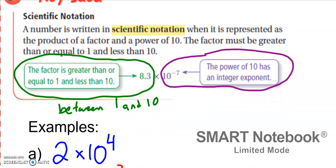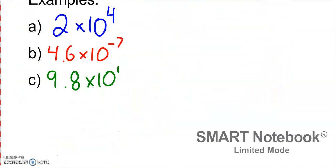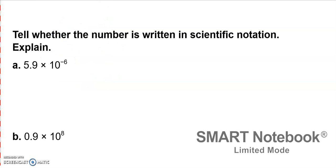Here are three more general examples. So 2 times 10 to the fourth — that's written in scientific notation because 2 is between 1 and 10. 4.6 times 10 to the negative seventh, that's written in scientific notation. And then we have 9.8 times 10 to the first. These are three other examples of numbers written in scientific notation. Let's go on to identify two more different examples, telling whether each number is written in scientific notation and explaining why or why not.